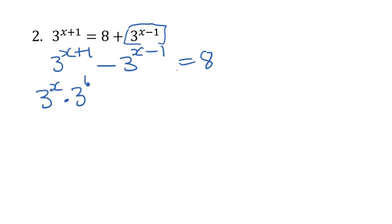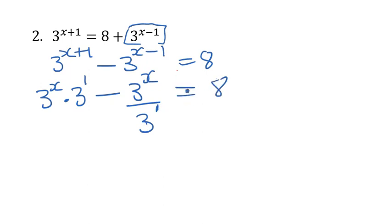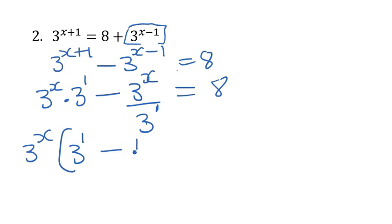We separate this: 3^(x+1) becomes 3^x multiplied by 3^1, because when we multiply the same bases we add exponents. On the other side, because of the minus, we are dividing the same base 3, so we subtract the exponent: that becomes 3^x divided by 3^1, which is 3^(x-1). Now we look at the problem — how many terms? Two. What do we have in common? 3^x. So we take 3^x out as the common factor, leaving 3^1 minus 1 over 3^1.